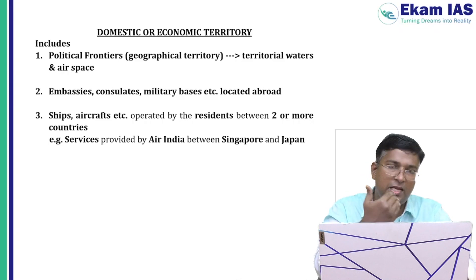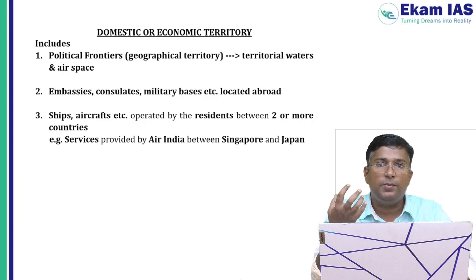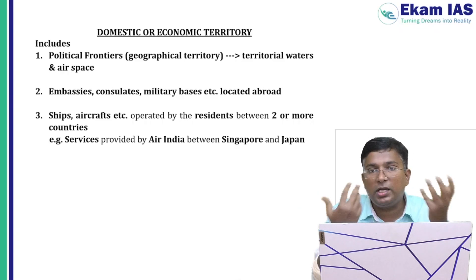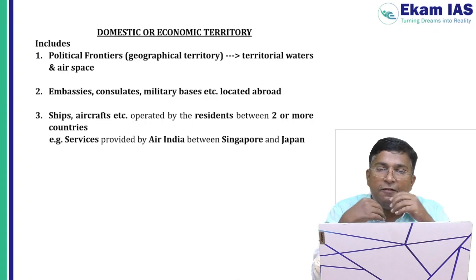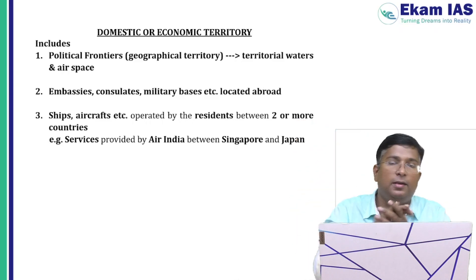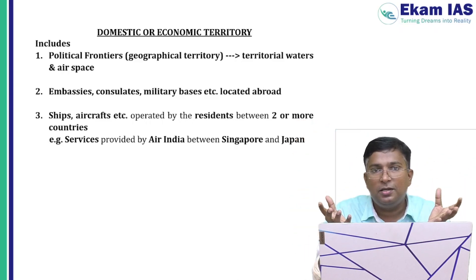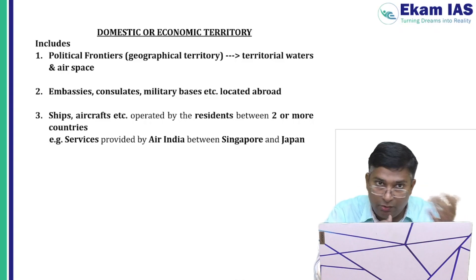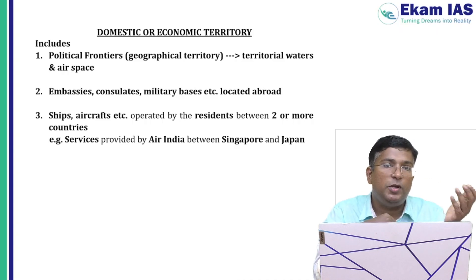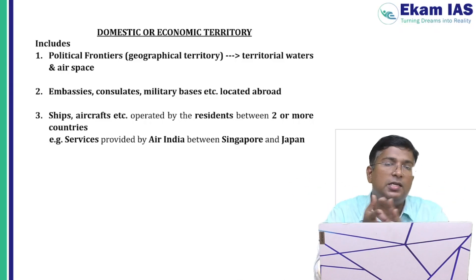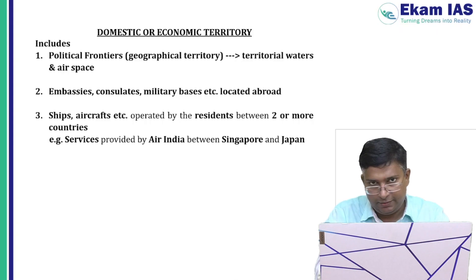For example, take the case of Air India. Air India is owned by an Indian entity, so the resident — the owner — is from India. If Air India is providing services between foreign countries, like from Singapore to Japan, that is still a foreign route, but since Air India is owned by an Indian resident, those services are included under domestic territory.